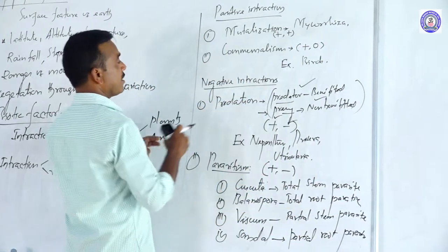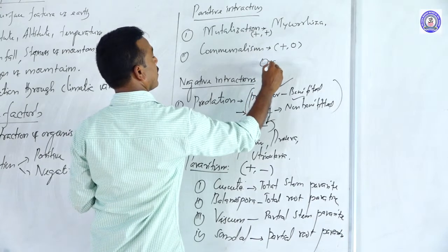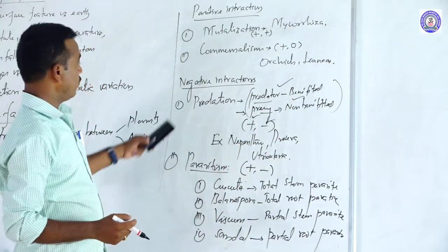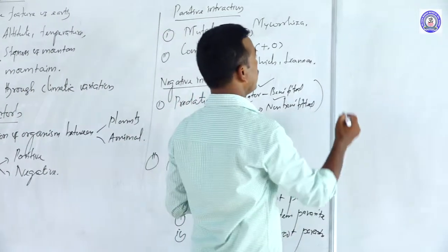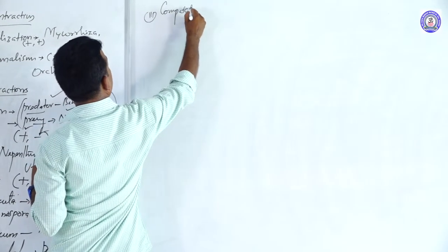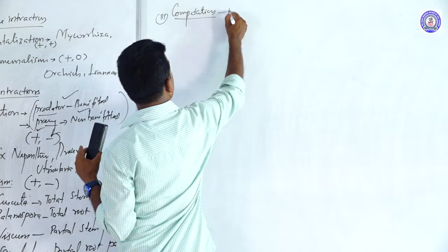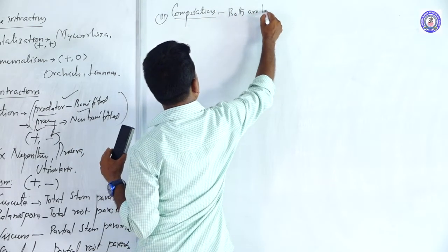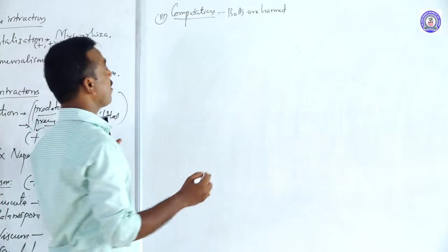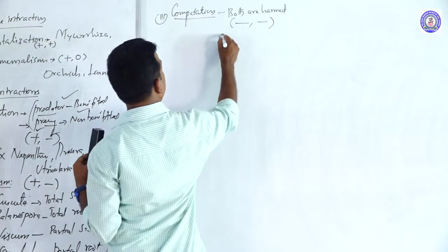In addition, examples of commensalism include orchids and lianas. For negative interaction, the third type is commonly called competition. In competition, both organisms are harmed. The involvement of two partners where both are harmed — symbol: minus/minus.